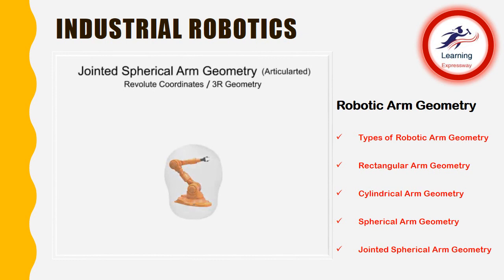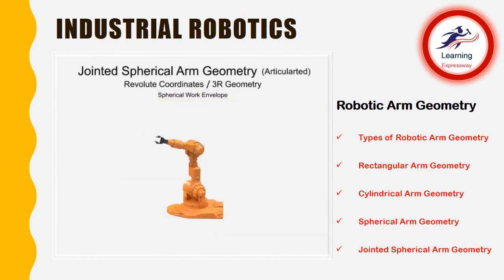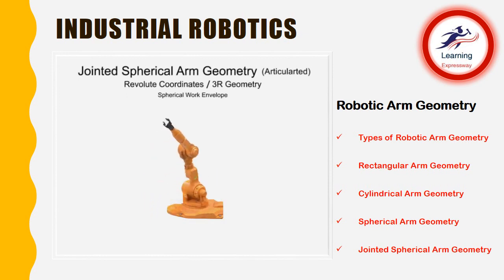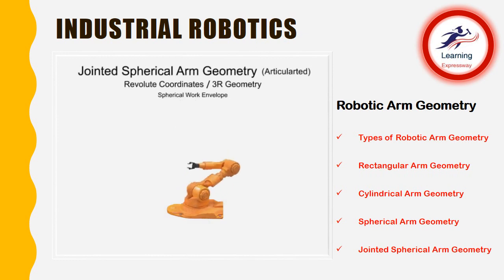Except for very close to the body, the work envelope of a jointed spherical robotic arm is almost entirely spherical. The advantages of this type of work envelope include very deep reach, minimal floor space use, and high positioning mobility of the tool end arm. Due to its mechanical complexity and the complexity of its controller, this robotic arm typically comes with a higher hardware cost and requires skilled technicians.